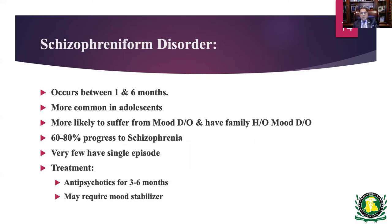Schizophreniform disorder occurs between one month to six months, is more common in adolescents, and patients tend to have more mood disorders and family history. Sixty to 80% progress to become schizophrenic. Even those that remit have recurrent episodes. We treat with antipsychotics, and may also require antidepressants and mood stabilizers depending on the mood symptoms they're exhibiting.